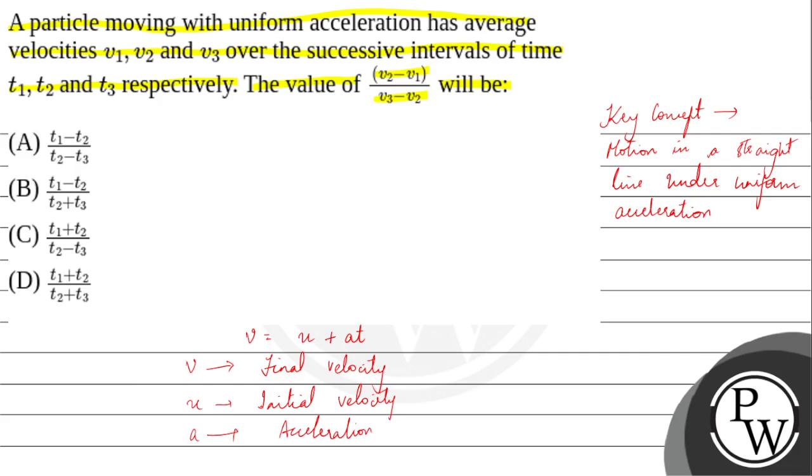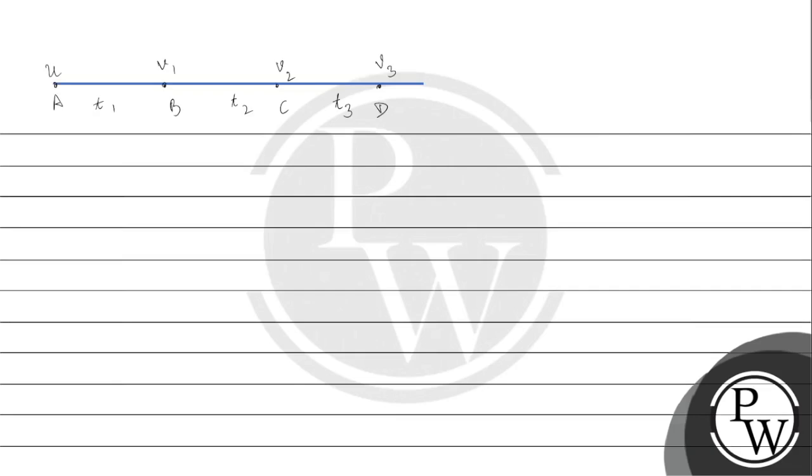To solve this question, we will take help of a diagram or figure. So, let A be the initial point and let u be the initial velocity.